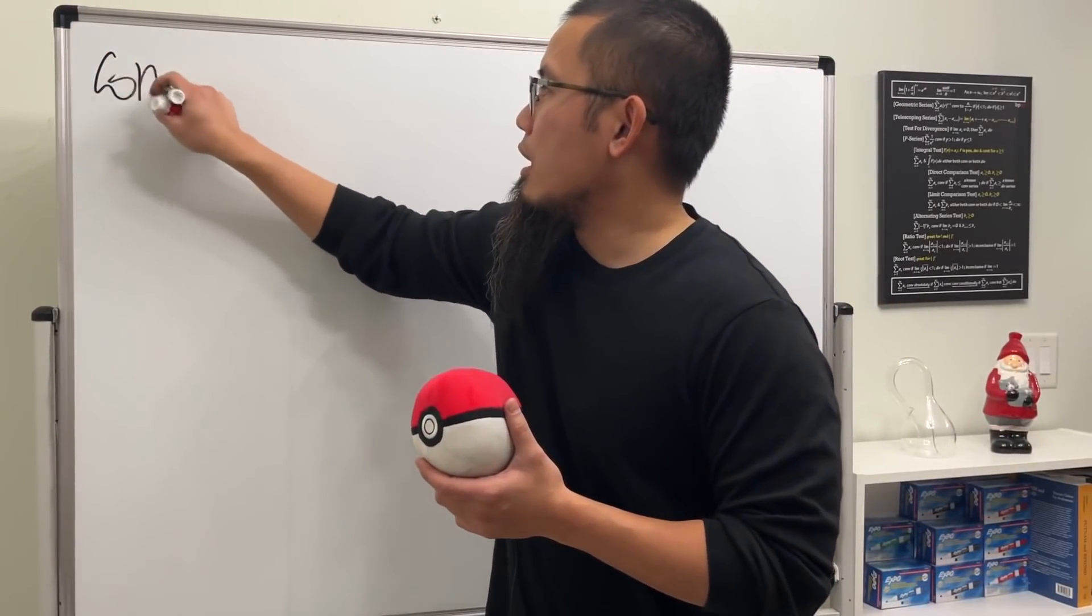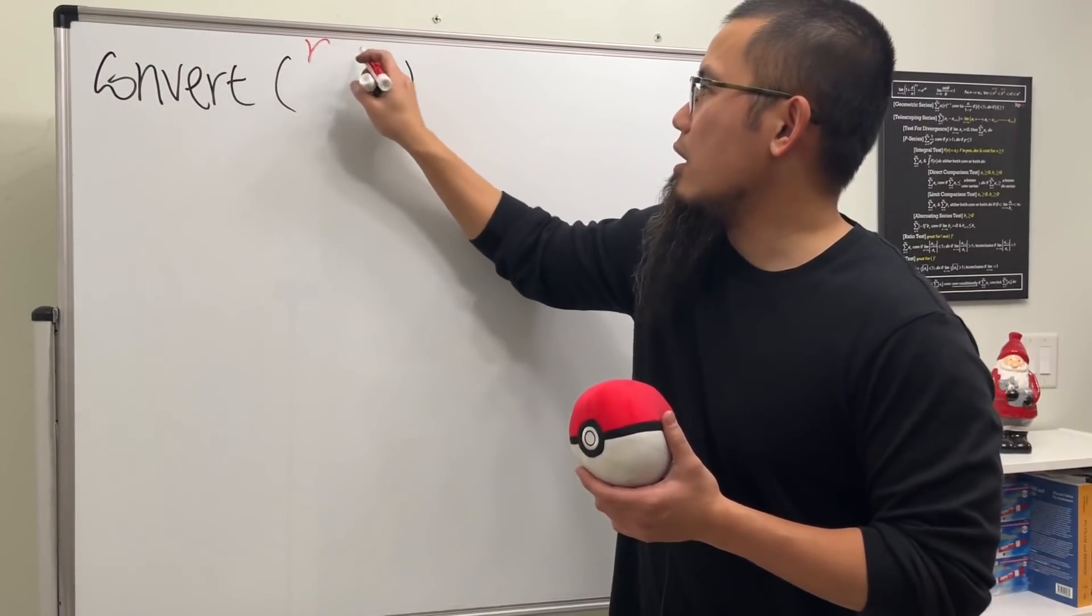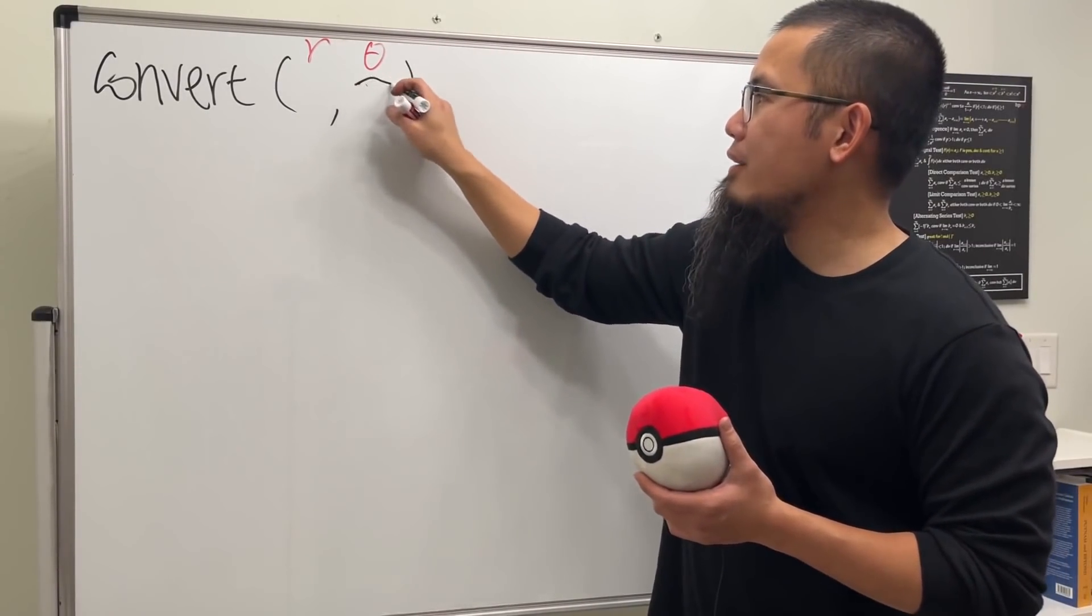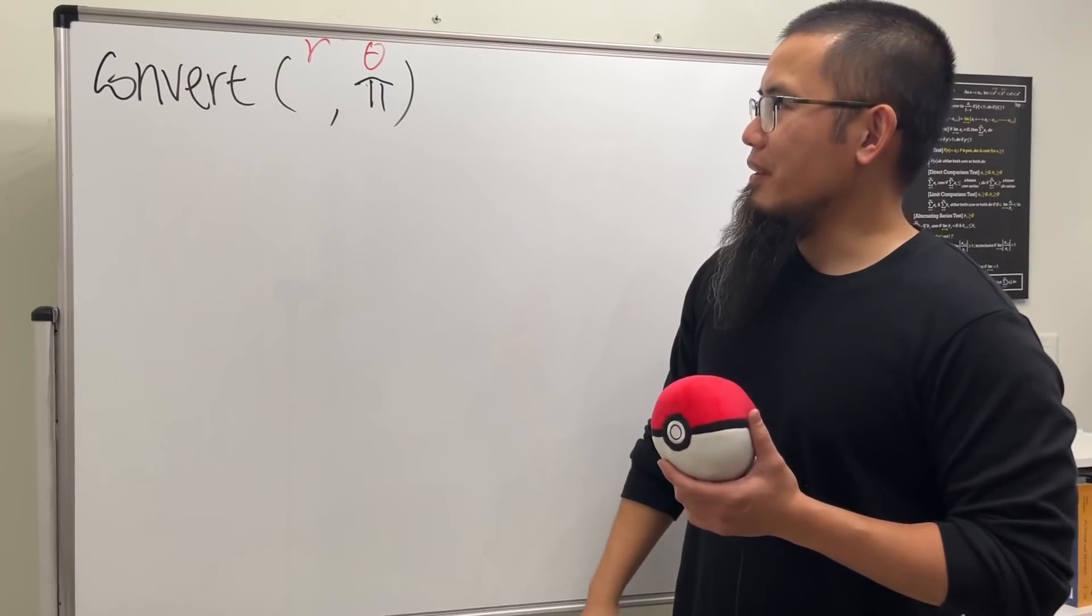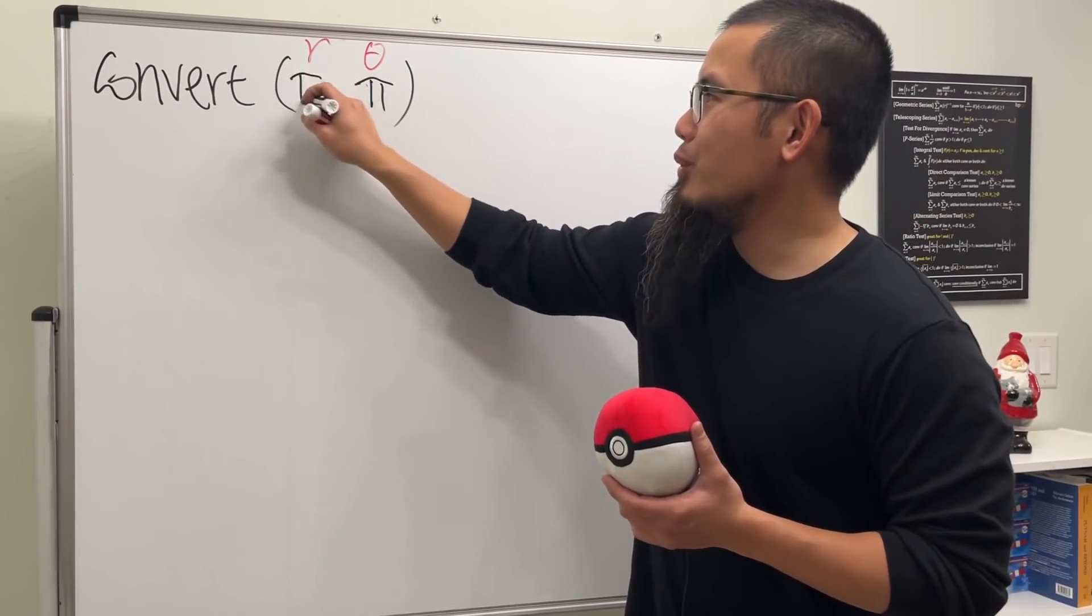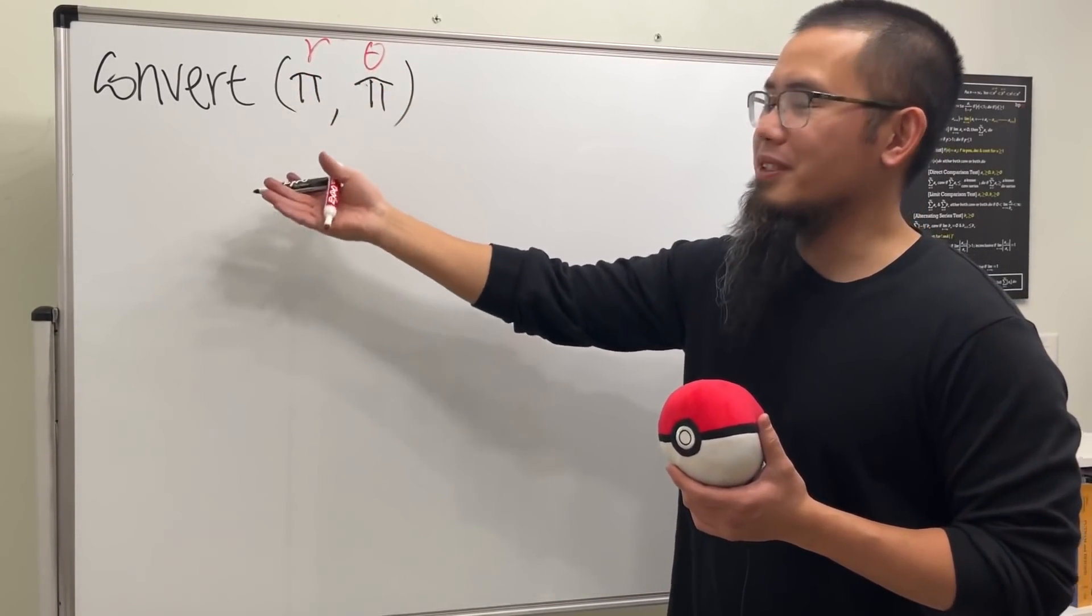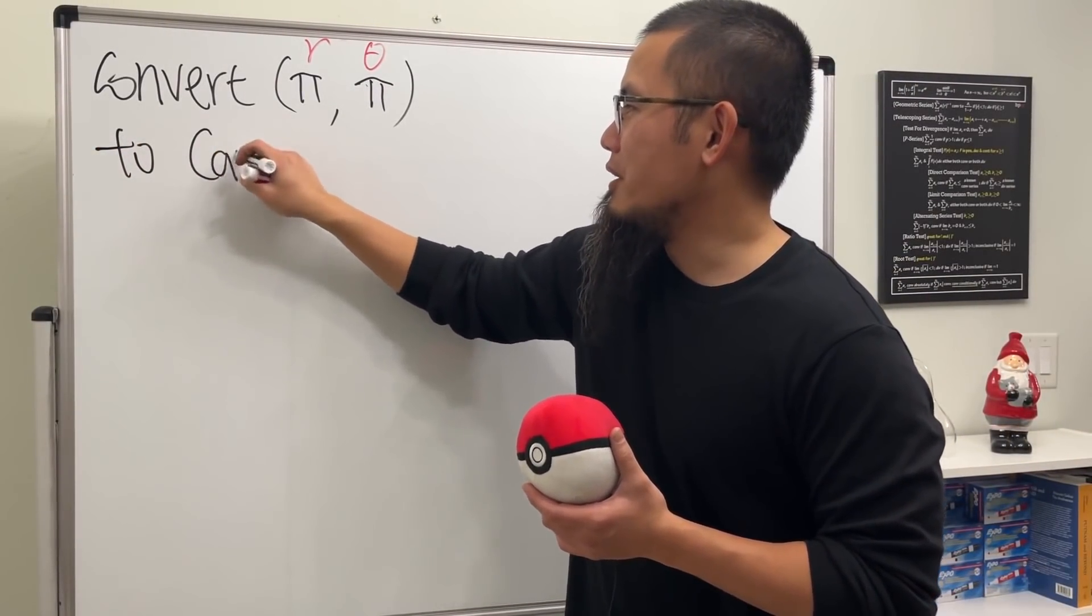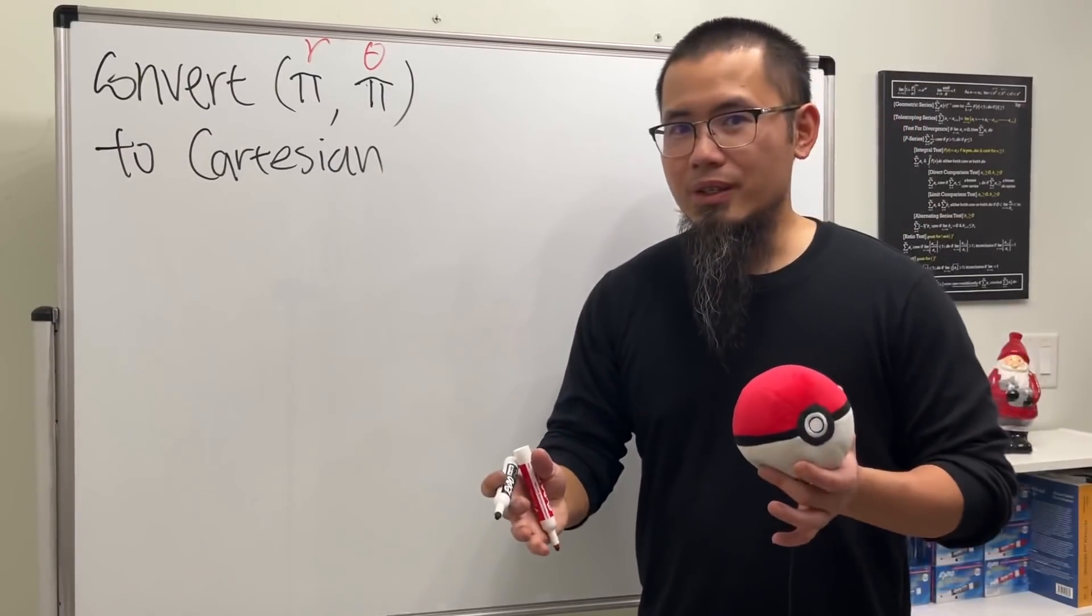Let's convert a polar coordinate where r is here and theta is here, and I'm just going to put π for the angle theta. I was thinking, wouldn't it be fun if I also make the r equal to π as well? So the question is, we are going to convert (π, π) to rectangular or Cartesian, meaning we just want the point with x and y.